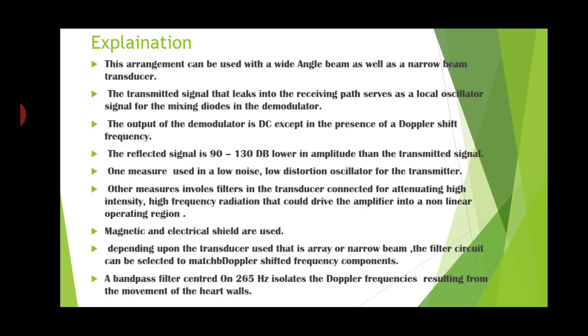One major consideration involves using a low noise, low distortion oscillator for the transmitter. Other measures involve filters in the transducer connected for attenuating high intensity, high frequency radiation that could drive the amplifier into a non-linear operating region. Magnetic and electrical shielding are used. Depending on the transducer, a broad or wide angle array or narrow angle beam may be used. The filter circuit can be selected to match Doppler shifted frequency components. A bandpass filter centered on 265 Hz isolates the Doppler frequencies resulting from movement of the heart walls.